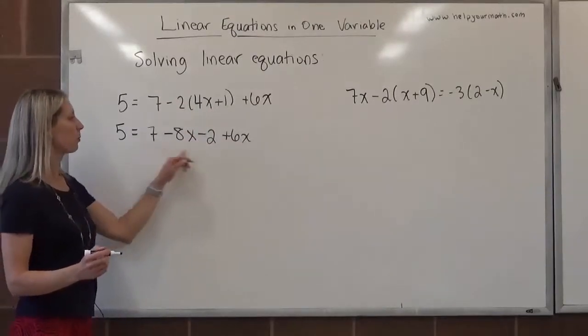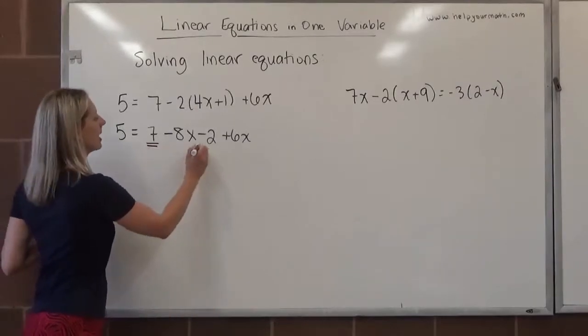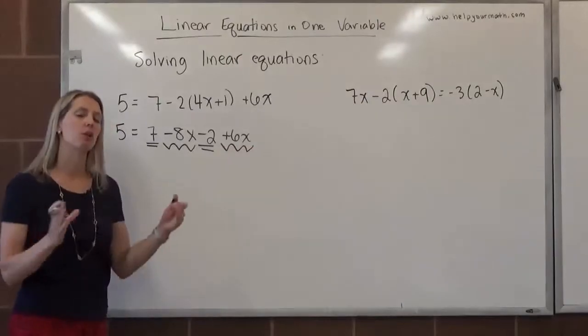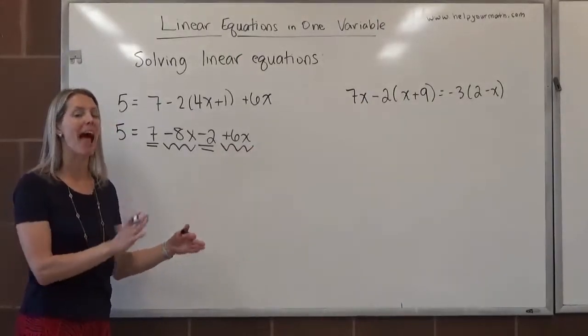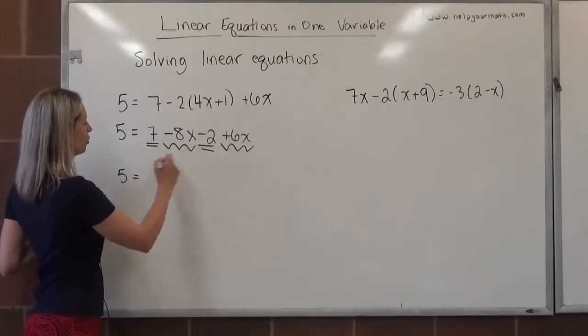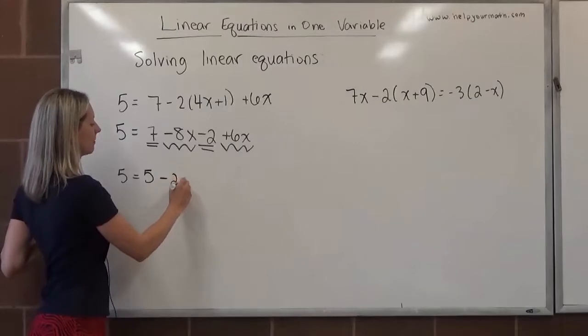From here on the right hand side, we do have like terms. We have 7 and negative 2, we have negative 8x and 6x. They're part of the same expression, so we combine them as they are. We get 5 equals, 7 minus 2 is 5, negative 8x plus 6x is negative 2x.